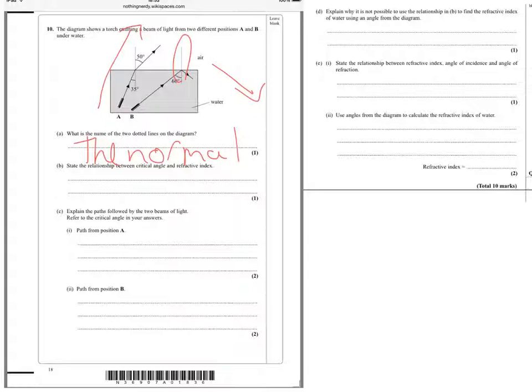State the relationship between the critical angle and refractive index. Another nice recall question, so that's that the critical angle is the inverse sine, sine to the minus 1, of 1 over n, the refractive index.